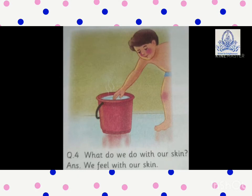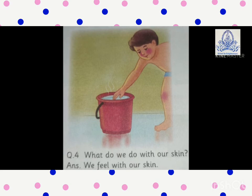Fourth, skin. What do we do with our skin? We feel with our skin. It helps us to touch and feel things. When you touch clay and wood, they both are different — clay is soft and wood is hard, woh hume chunay se pata chalata hai. Our skin can also feel hot and cold, soft and hard, liquid and solid. Ghiila ho ya sukhha ho, thanda ho ya garam ho — woh sab hume skin se chunay se pata chalata hai, hai na?